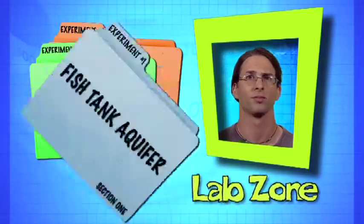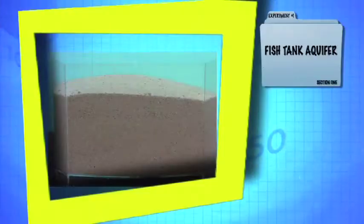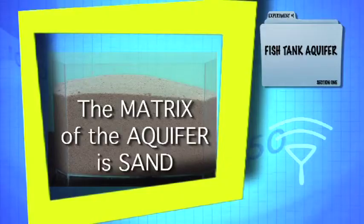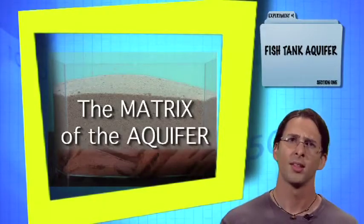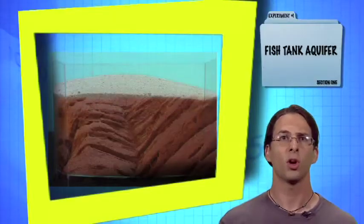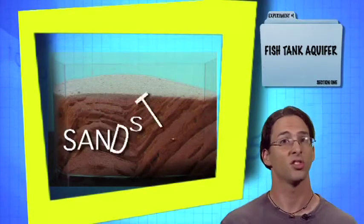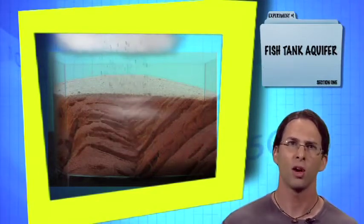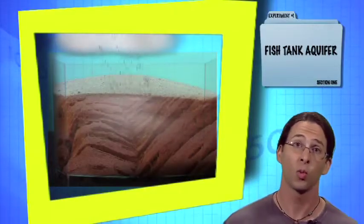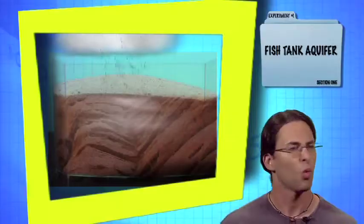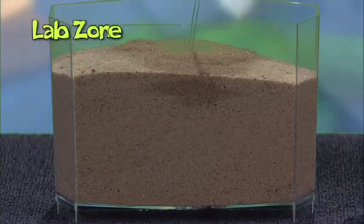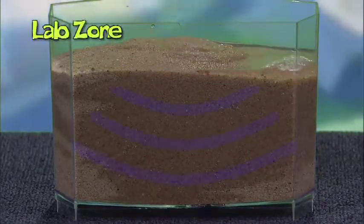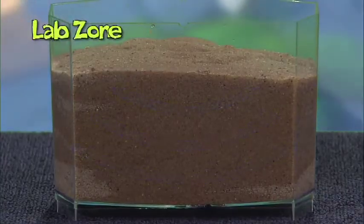Let's check this out — we're going to make our own aquifer. In this model, I've put some sand in a fish tank. The matrix of the aquifer is sand. I'm going to pretend that the sand is rock, which isn't a far stretch — there are rocks comprised entirely of sand, and they're called sandstone. When I pour water into the tank, I'm mimicking when it rains. The water moves down through the sand and gathers at the bottom. Since water underground is an aquifer, we've just made a little aquifer.